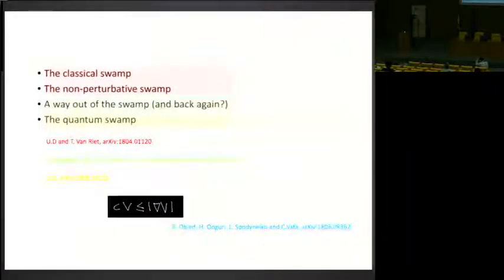Okay, so the outline is basically this one. First I will give some kind of comments on the classical part of what might be a swampland, as well as the non-perturbative part. And then, just not to get too depressed, we'll take an excursion away from this swampy region to see whether there are some escape routes somewhere. And then we'll go back and see that things are probably even worse when we start to consider quantum effects.